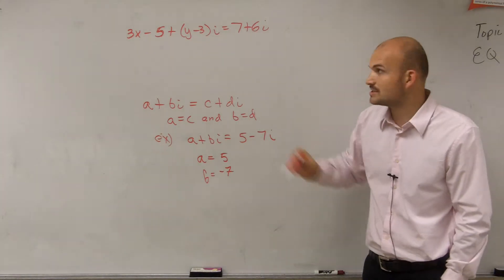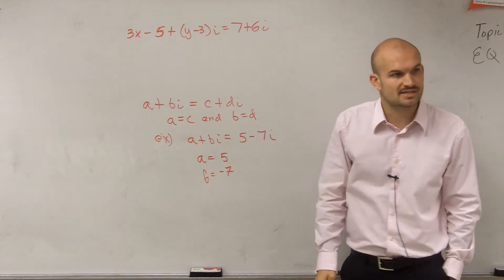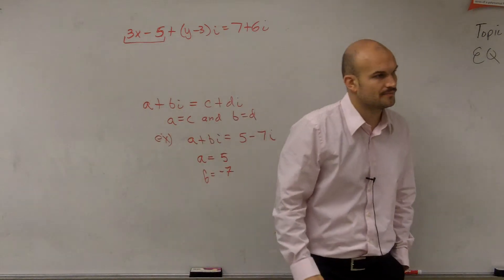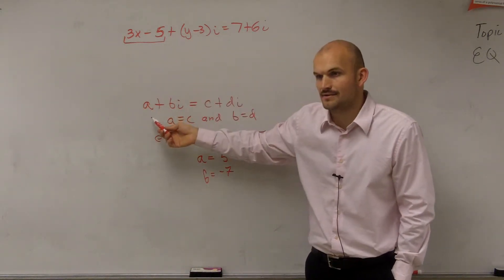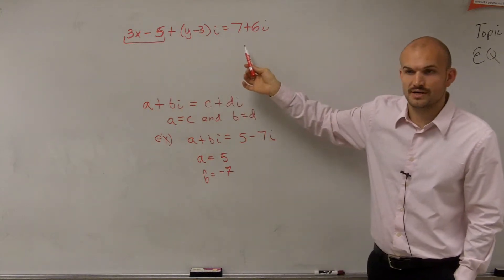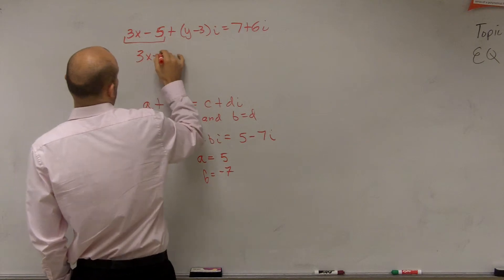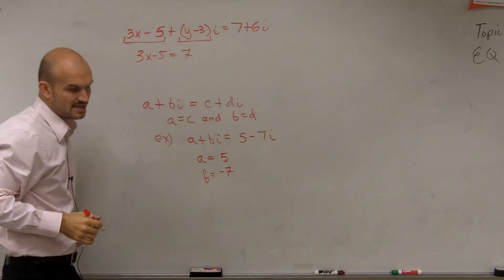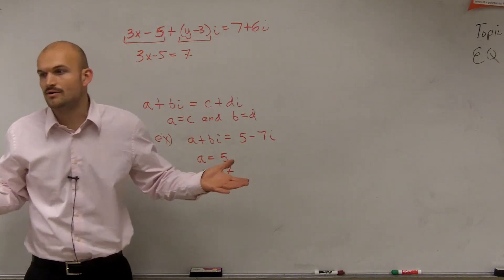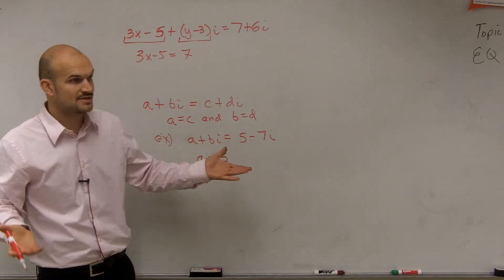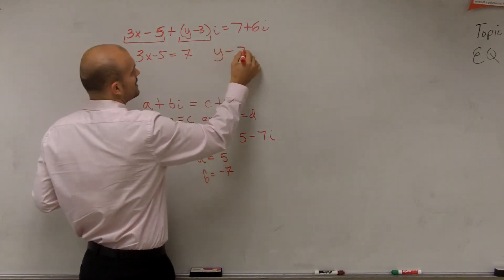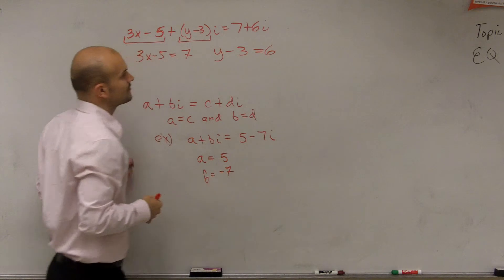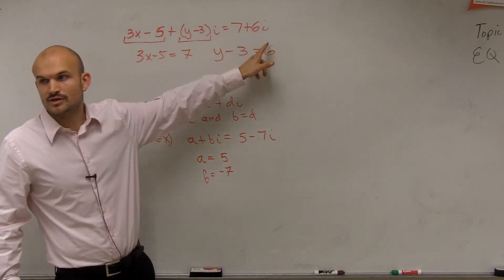Since these are complex numbers, if I want to figure out the value of x and the value of y — the value of x, is that real or imaginary? Real. So that's like the same thing as my a. So this has to equal seven over here. So you write 3x minus five equals seven. Then over here, y minus three is the imaginary part's coefficient, so y minus three has to equal six — because that's the coefficient of i for your other complex number.